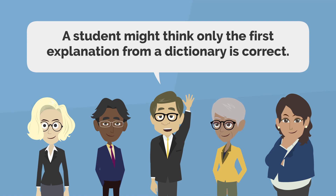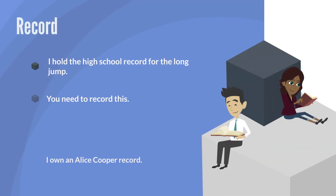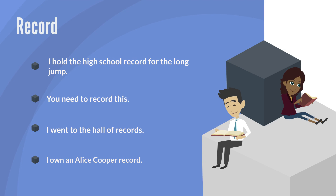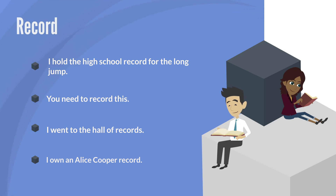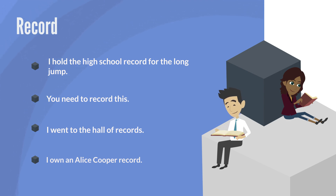However, if you look at the different meanings, you will understand what a student might think when reading a sentence and choosing only the first dictionary explanation. For example: 'I hold the high school record for the long jump' means I am the best at something. 'You need to record this' means you need to tape something — and this has a different pronunciation. 'I went to the hall of records' refers to a place where public documents are kept.